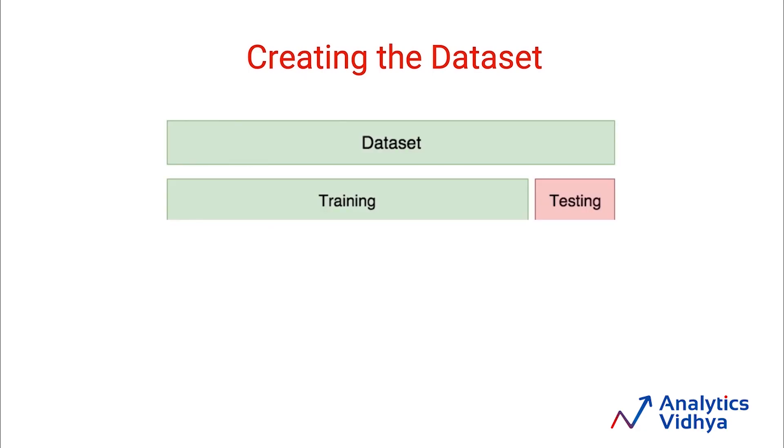But the challenge is how do we create a predictive model on this? To do that, we divide the dataset into two parts. The first part is called a training dataset, and the second part is called a testing dataset. We do this to make sure that our model is robust and it does not overfit the data.